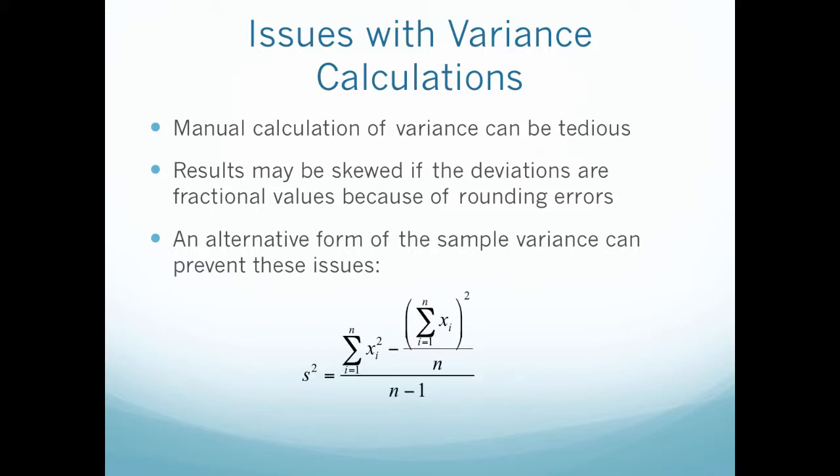Here we would simply square each value, then minus the addition of each value quantity squared all divided by n, and then that entire quantity divided by n minus 1. Since that seems a little confusing and daunting, let's do an example.